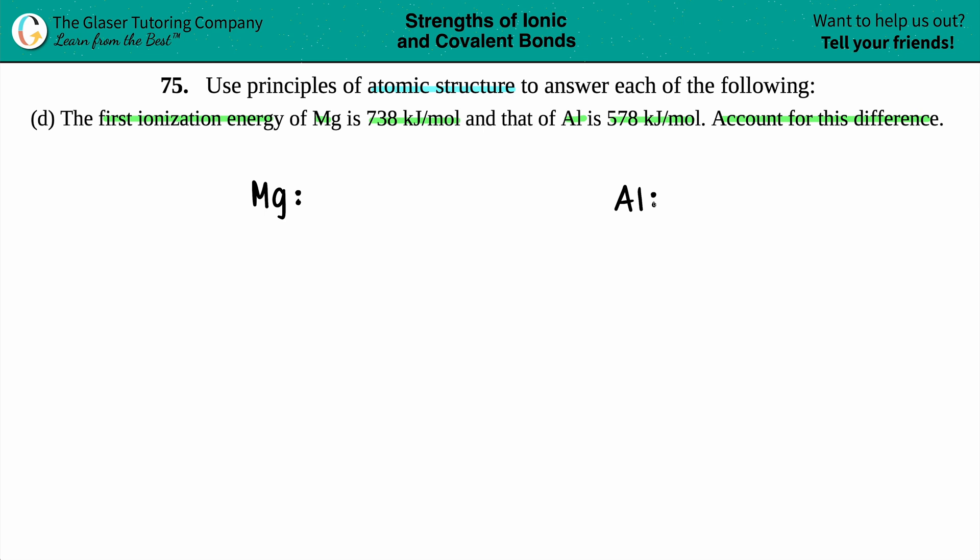For both magnesium and aluminum, the noble gas that is preceding both is neon, so I'm going to do the shorthand. By the way, if you're having trouble writing the electron configuration, you could always check out the channel. We have tons of videos designated to drawing the electronic structure.